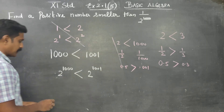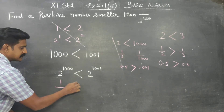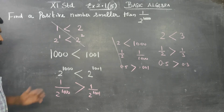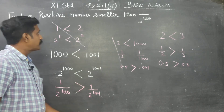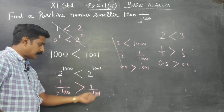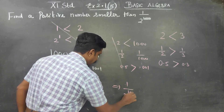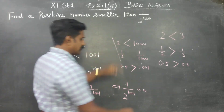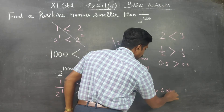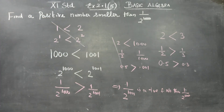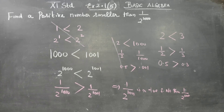Taking the reciprocal: 1 by 2 power 1001 becomes the bigger denominator, so it becomes the smaller number. This implies 1 by 2 power 1001 is a positive number smaller than 1 by 2 power 1000.